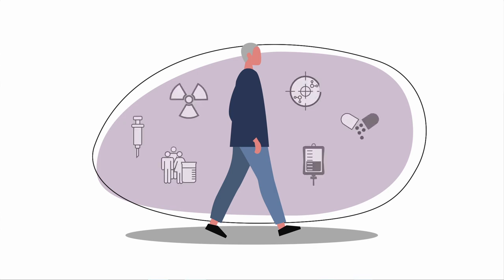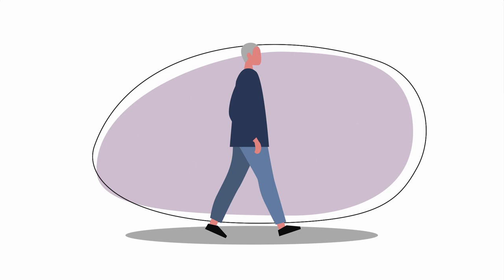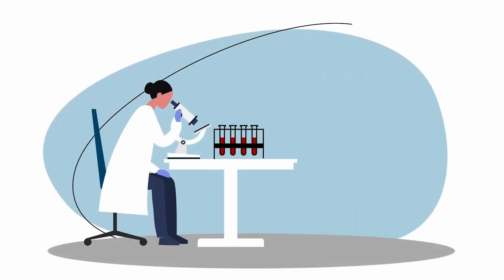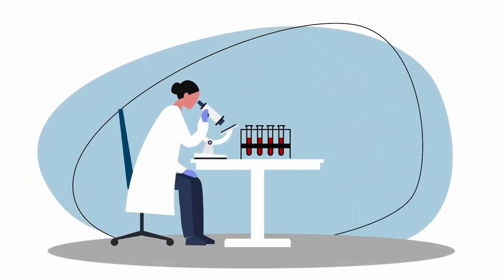Active surveillance is a period of no direct treatment, but it does not mean doing nothing. Instead, it means watching your disease closely and delaying treatment until it is needed.